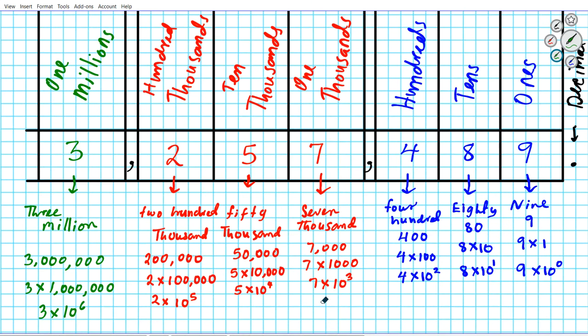Our table has been filled out completely and we've been able to identify the value of each digit based on its place value, writing it in name, numerical, and expanded form with and without exponents.